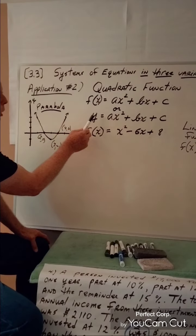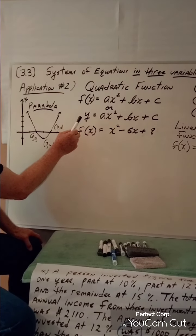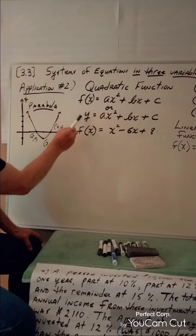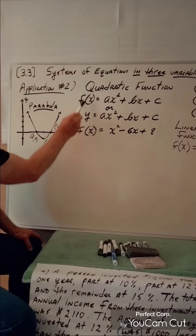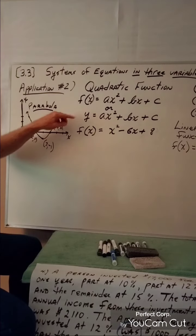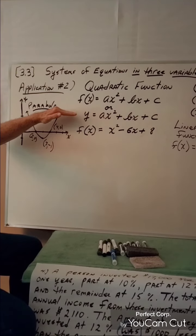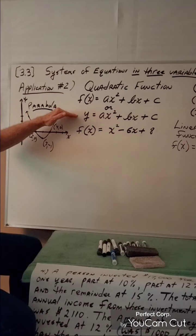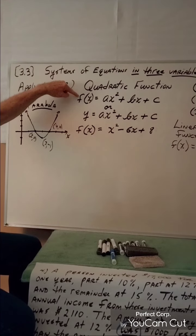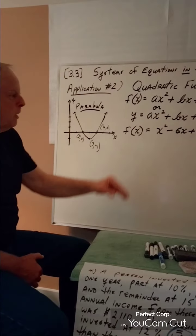I also want you to note that f(x) and y mean the same thing — they're both the range. So y = ax² + bx + c is the way a quadratic function is often written, as you may see y written instead of f(x).